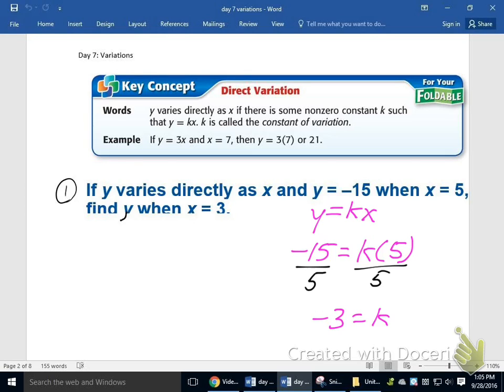Now I'd be able to make my function. My function would have to be y equals negative 3x, since that was my constant of variation. The rest of the problem is really easy. It says find y when x is equal to 3. I'm just going to substitute that 3 in for x. y equals negative 3 times 3, and that's going to be negative 9.